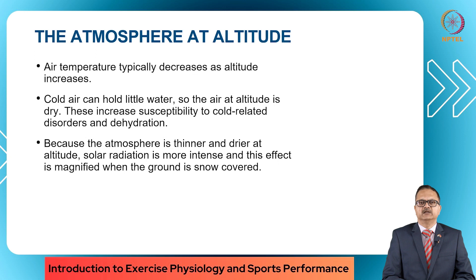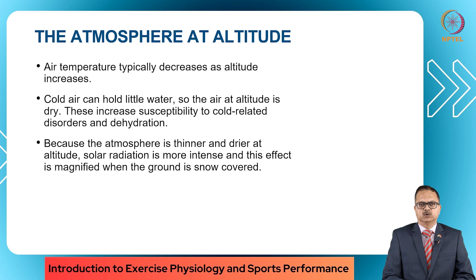Air temperature typically decreases as altitude increases. Cold air can hold little water, so the air at altitude is dry. These conditions increase susceptibility to cold-related disorders and dehydration. Because the atmosphere is thinner and drier at altitude, solar radiation is more intense, and if the ground is snow covered, the solar radiation is magnified, leading to a condition called snow blindness.